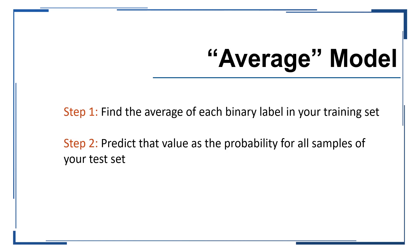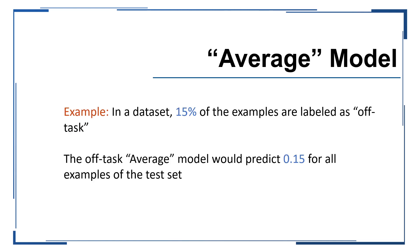Improving on the majority class, we could also consider an average model. In this case, we find the average of each binary label in our training set — in other words, we calculate the proportionality of each label. Or we could also just take the average of a continuous-valued label and use that average as the prediction for all samples of the test set. In our earlier example, if 15% of labels are off-task, we might predict 0.15 for all samples in the test set.